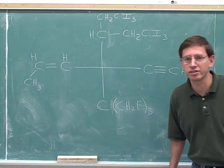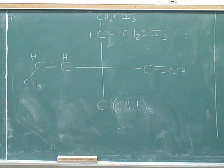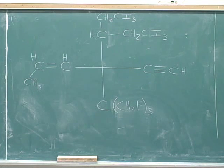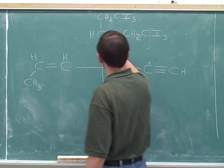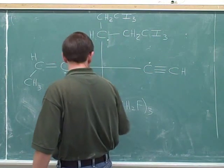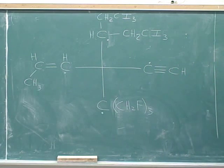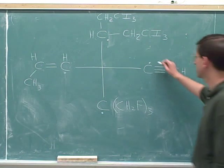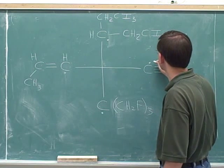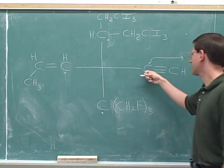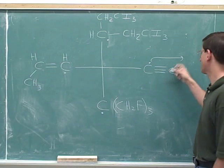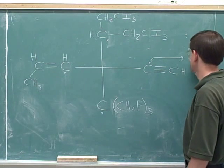Determine the configuration at this stereocenter. We'll put dots in for the directly connected atoms. There's a four-way tie, so let's list what each of the atoms is connected to. This carbon is triple bonded to a carbon, and that counts as three separate carbons.